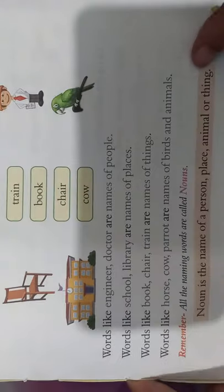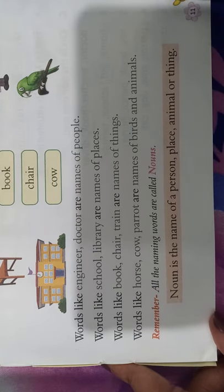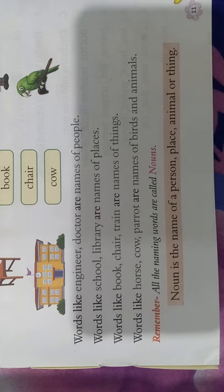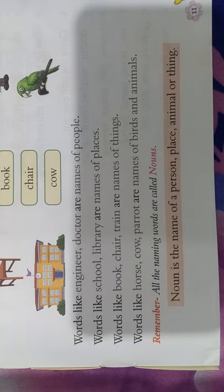What do you understand? Words like engineer, doctor are names of people. Words like school, library are names of places. Words like book, chair, train are names of things. Words like horse, cow, parrot are names of birds and animals. Remember, all the naming words are called nouns. In short, noun is a name of a person, place, animal or thing.